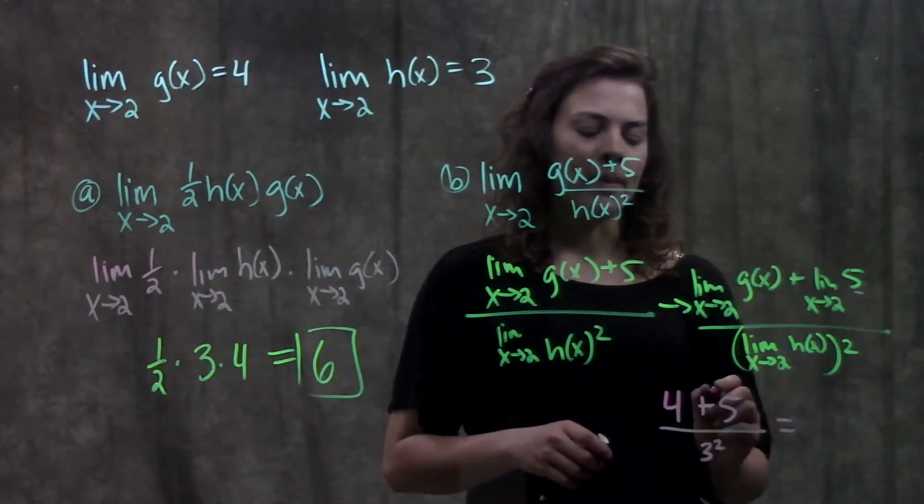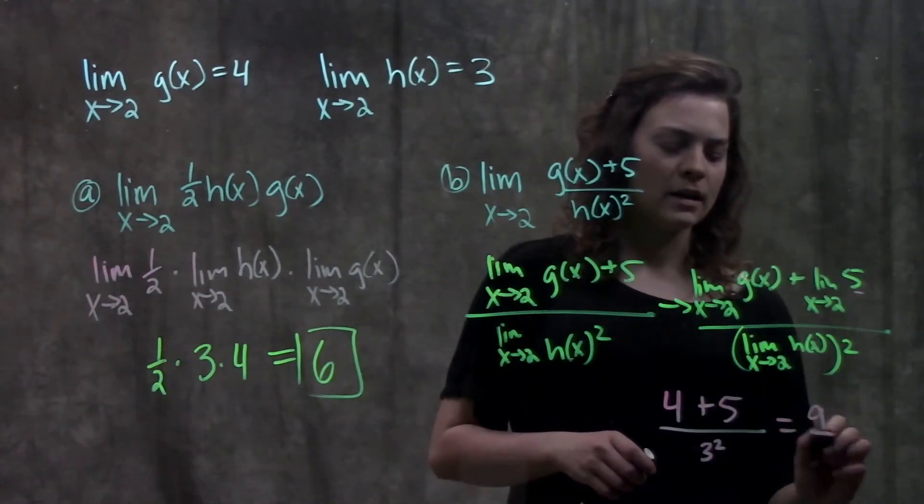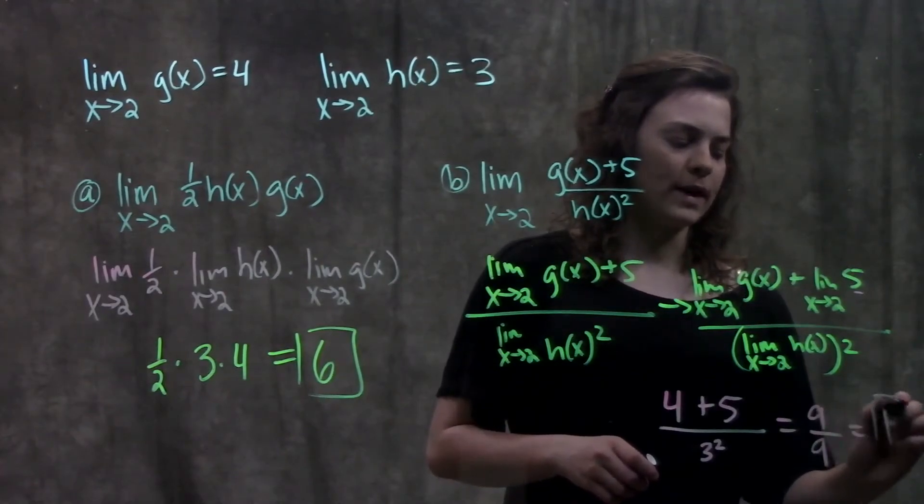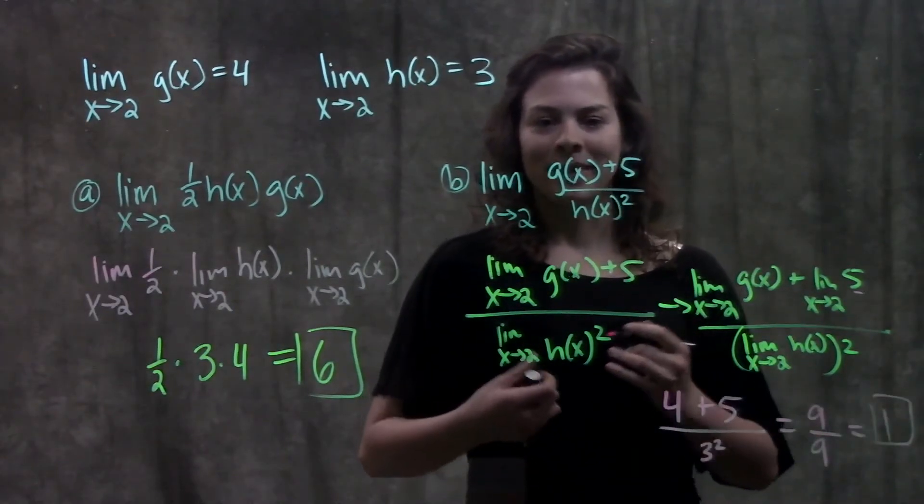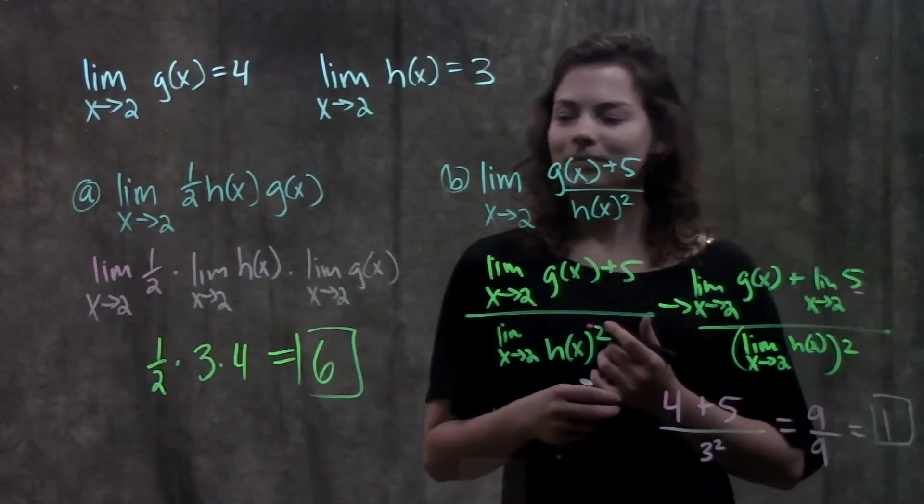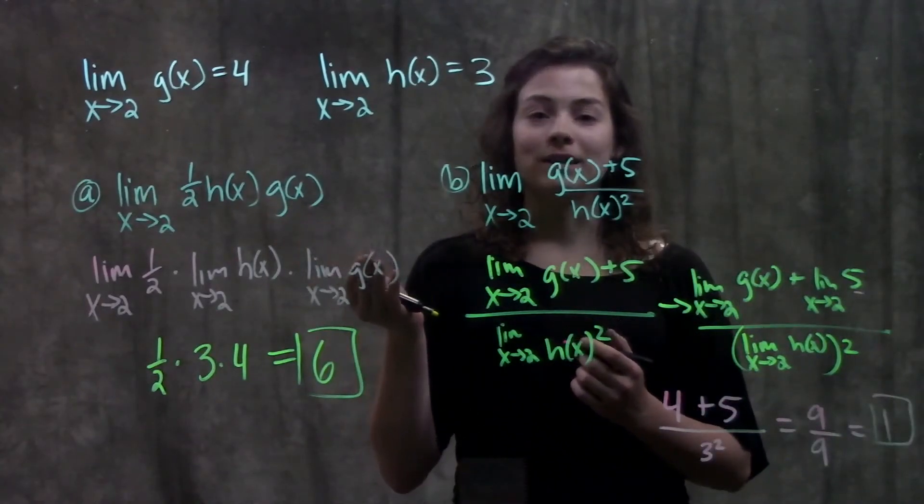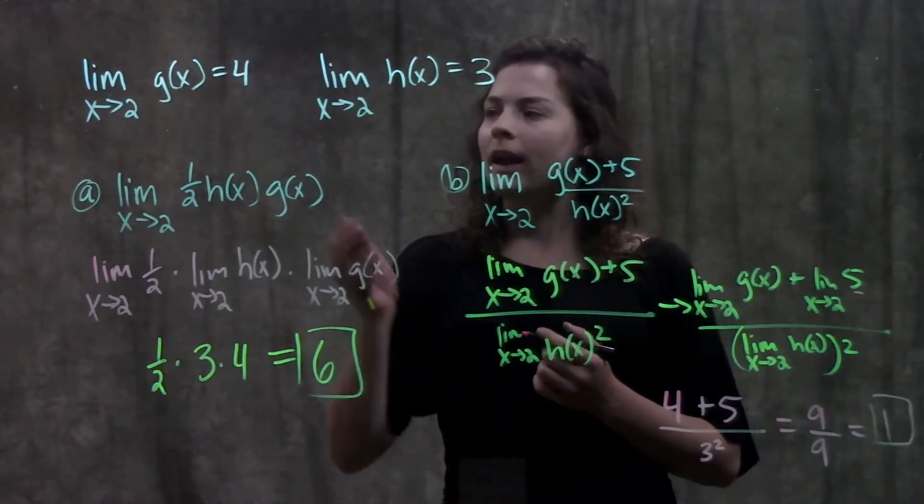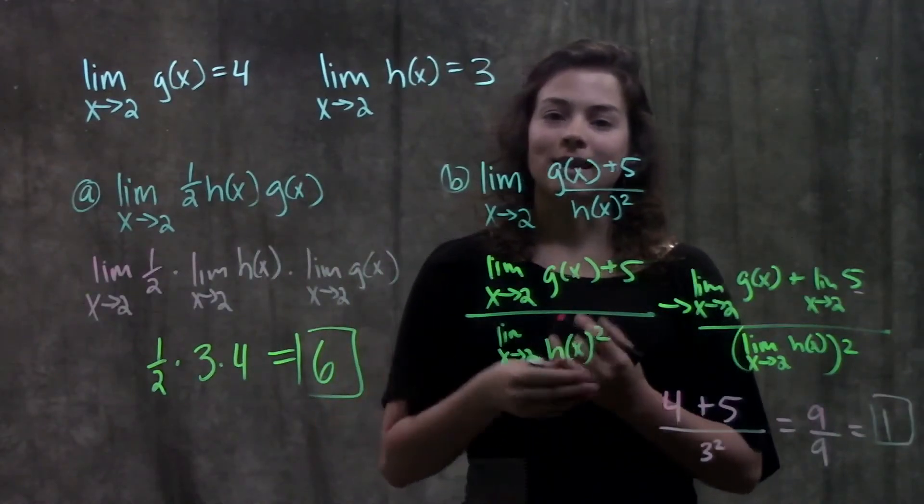Simplifying this out, on the top, I'll get 4 plus 5, which is 9, over 3 squared, which is 9, which just simplifies out to be 1. And that's it for this problem. We just simplified out these limits using our basic limit laws, and then we're able to plug in all the values that they gave us in the question.